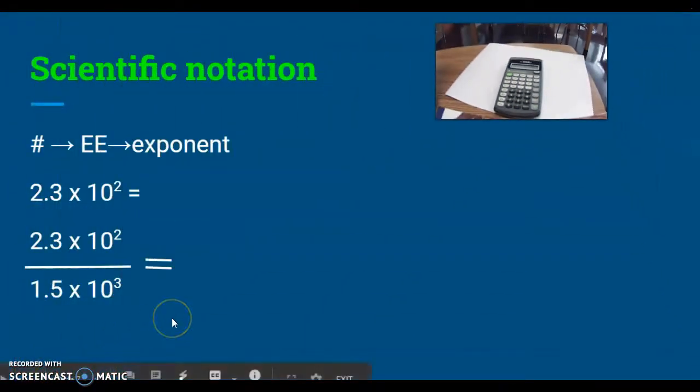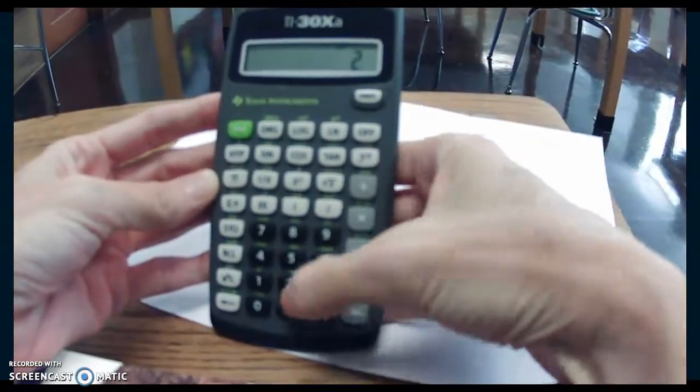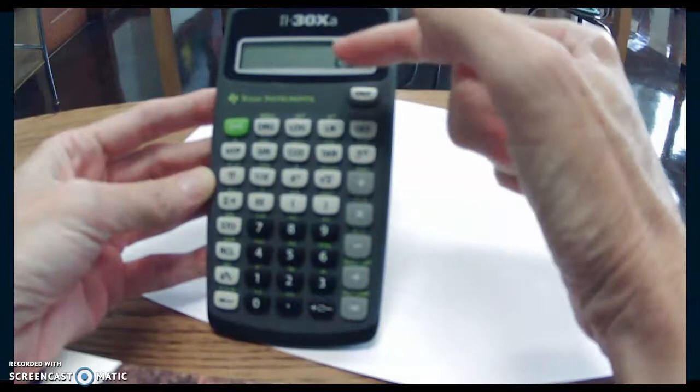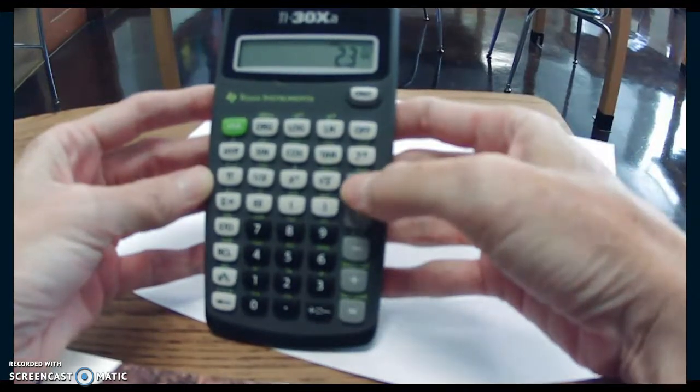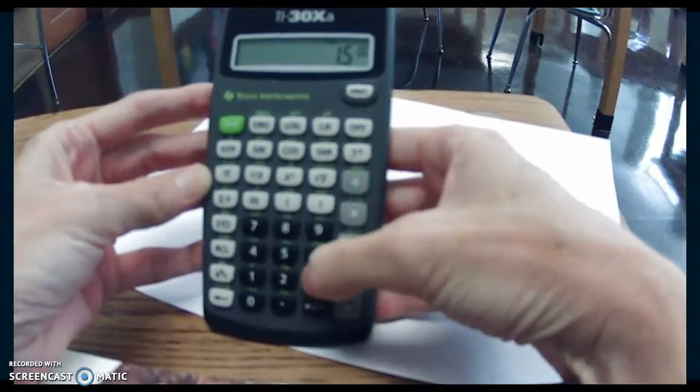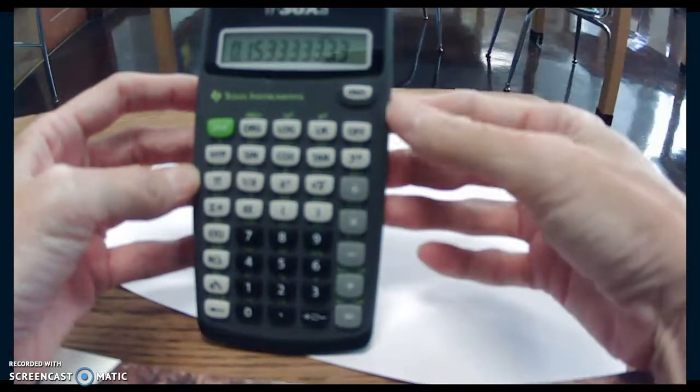Let's try a little bit more complicated problem. In this case, we're going to have 2.3 times 10 to the second, and we're going to divide it by 1.5 times 10 to the third. Again, we start out the same way we did before: 2.3 exponent times 10 to the second. In this calculator, it already knows that that number is by itself, so we don't have to put in the parentheses. Then we're going to divide it by 1.5 exponent times 10 to the third. And now we can hit equals, and you should get 0.153.